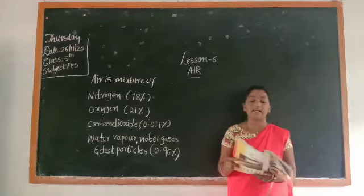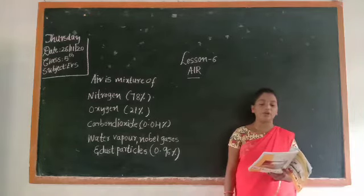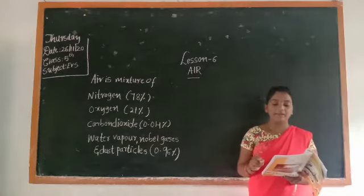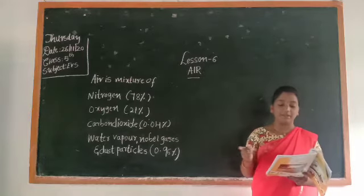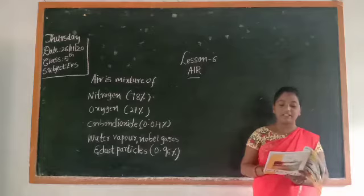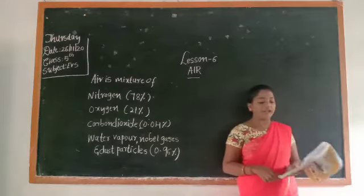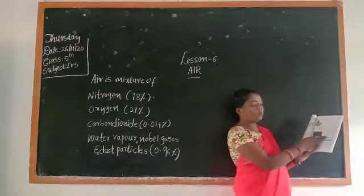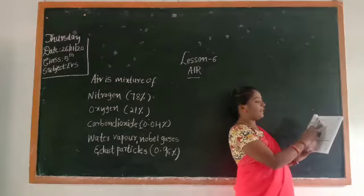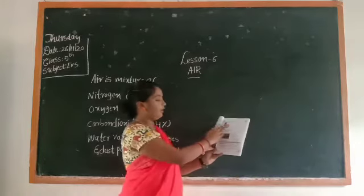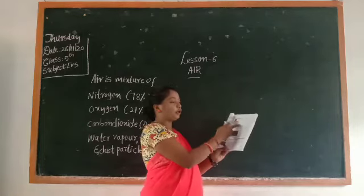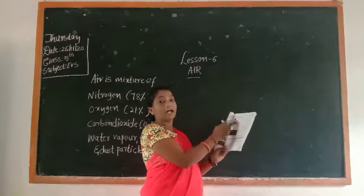Come to page number 79 — match by drawing lines. You have to match this. First picture: she is blowing a balloon. The options are: air helps things burn, air occupies space, and air has weight. The first picture — she is blowing a balloon — the answer is air occupies space.